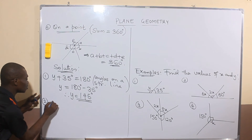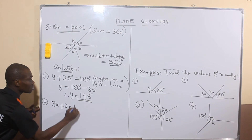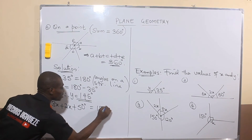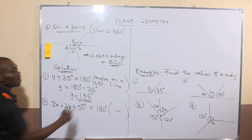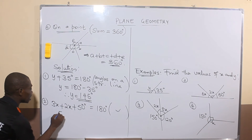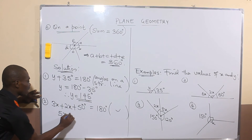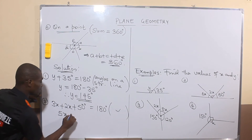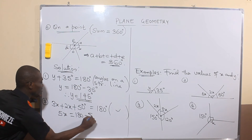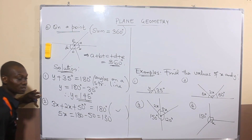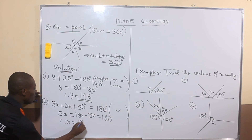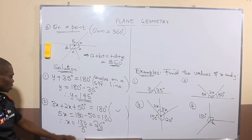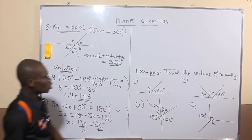For example two, it's also angles on a straight line, so: 3x plus 2x plus 50 degrees equals 180 degrees — same reason as before. Simplifying: 5x plus 50 equals 180. Taking 50 to the other side: 5x equals 180 minus 50, which is 130. Therefore x equals 130 divided by 5, which equals 26 degrees.